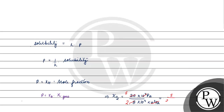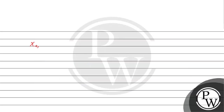It will be 5 by 2 into 10 raised to the power 4. After cancelling, it will be 2,000. So the mole fraction of oxygen is equal to 1 upon 4,000.